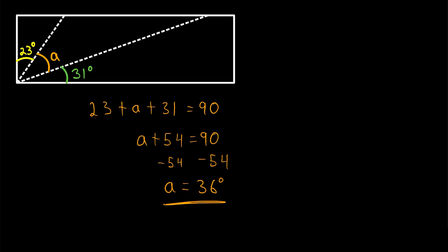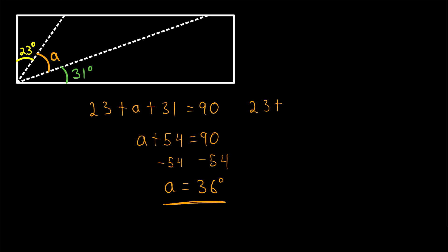If you're ever a little unsure about your answer, it's always good practice to plug it back into your original equation and see if it makes it true. In this case, we'd have 23 plus 36 plus 31, which should equal 90. Adding up the tens: 20 plus 30 is 50, plus another 30 is 80. Adding up the ones: 3 plus 6 is 9, plus 1 is 10, so 80 plus 10 is 90. That checks out — our answer is right.